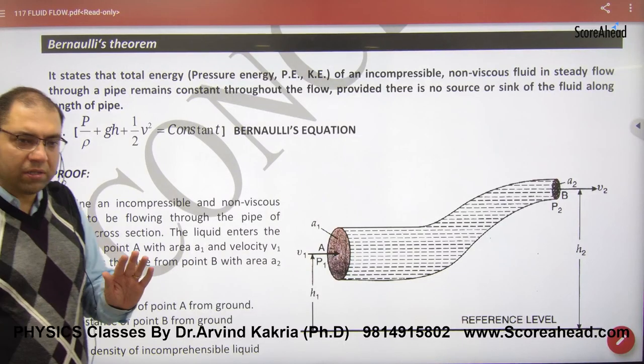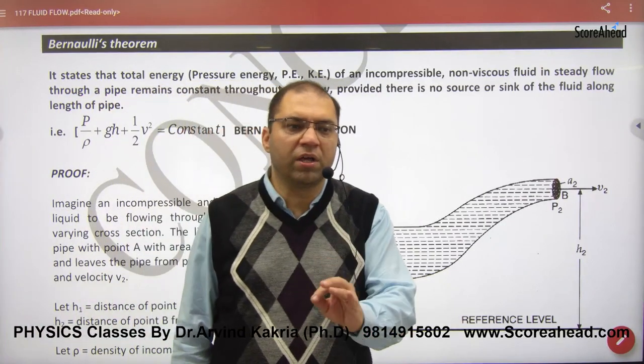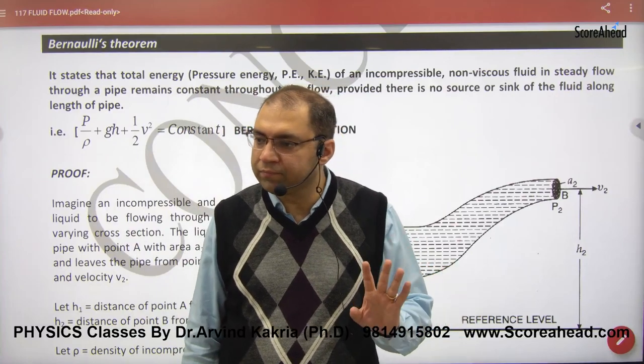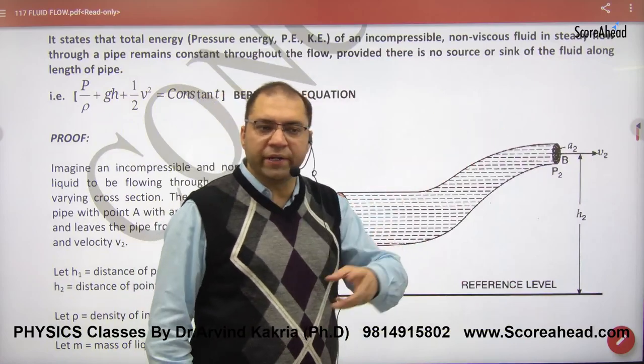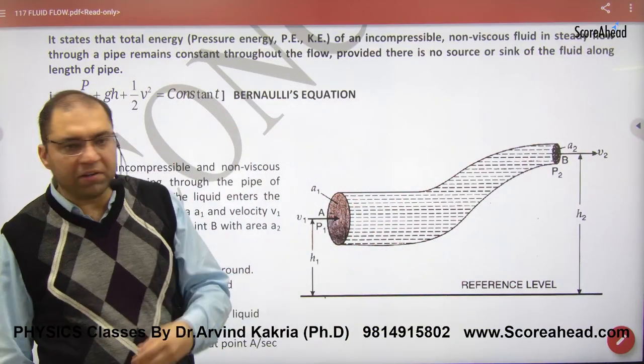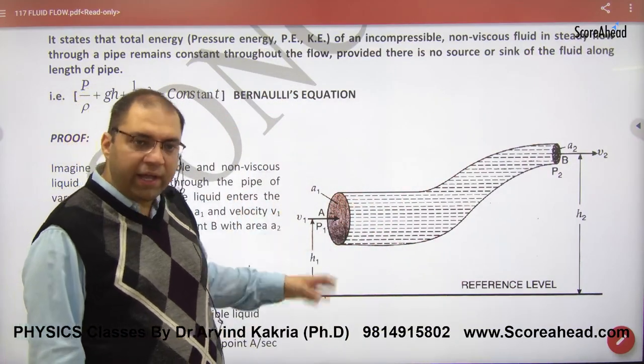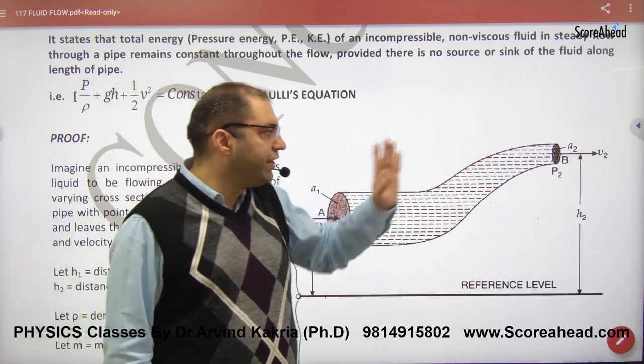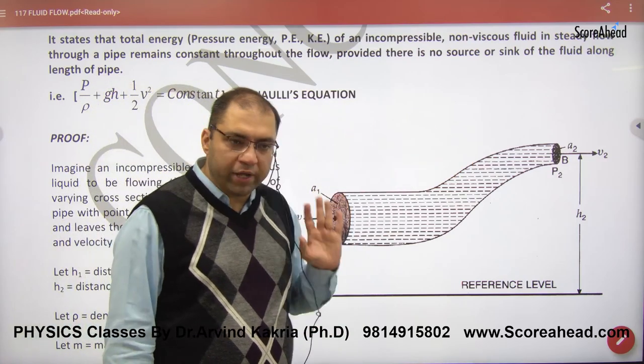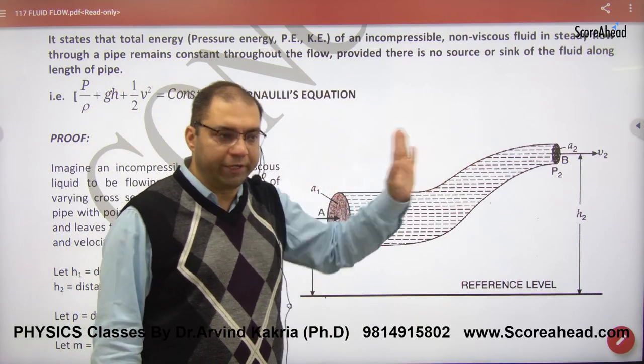Bernoulli's theorem is basically another name for energy conservation. If you have a pipe, up or down, this is the worst case where height is h1, h2, where liquid is entering with velocity v1 and v2, area of cross section a1 and a2, pressure p1 and p2.